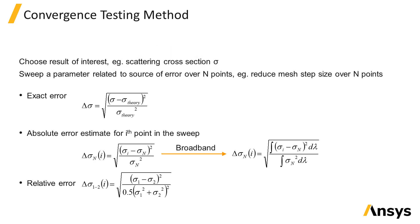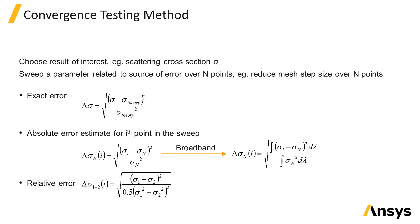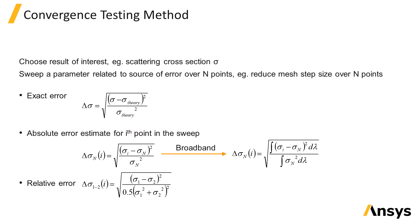In the case where you already know the correct value of the result analytically, you can calculate the absolute error in the simulated result using the equation here. However, you don't usually have an analytic answer to compare the simulation results with, so instead you can estimate the absolute error due to a particular source of error by running the simulation varying one of the parameters related to a source of error, such as the mesh step size. If we sweep the mesh step size, reducing it over n points, and collect the result at each point, we can estimate the absolute error for the ith point using the equation here, where sigma_i would be the scattering cross-section for the ith point and sigma_n would be the cross-section at the final point in the sweep. Similarly, the relative error between two points in the sweep can be calculated using the equation here.